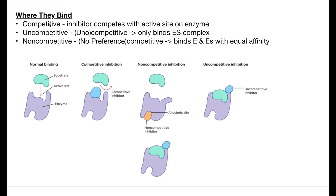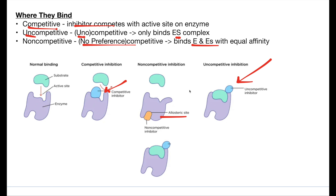You also need to know where they bind — meaning are they binding at the active site or is the inhibitor binding allosterically? For competitive, think the inhibitor competes with the active site, so it binds at the active site. For uncompetitive, I think 'uno competitive,' meaning it only binds one location, and that location is the enzyme-substrate complex. For non-competitive, I think 'no preference,' meaning it binds both the enzyme and the enzyme-substrate complex with equal affinity.